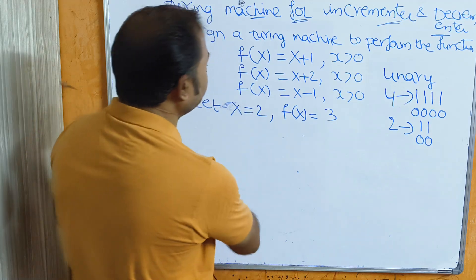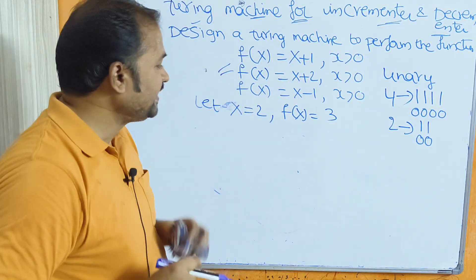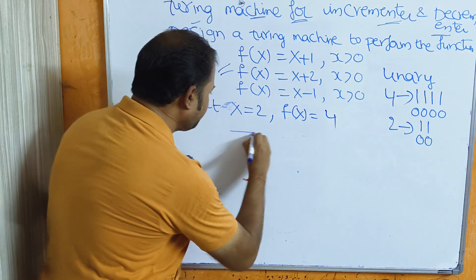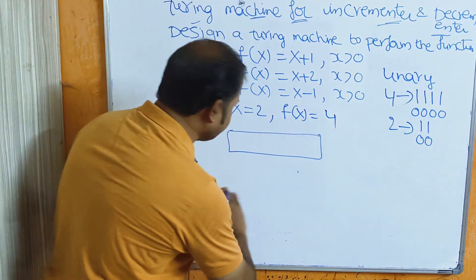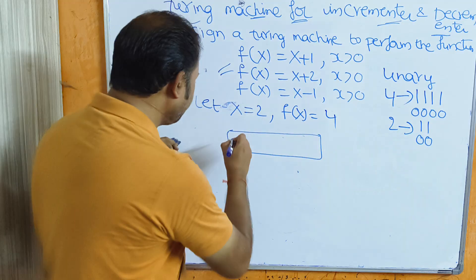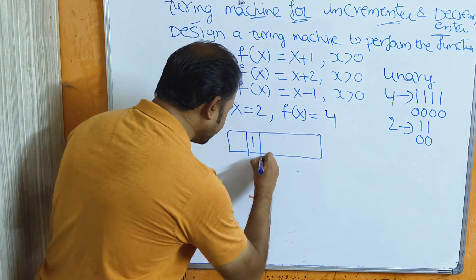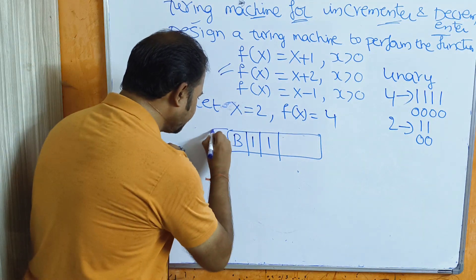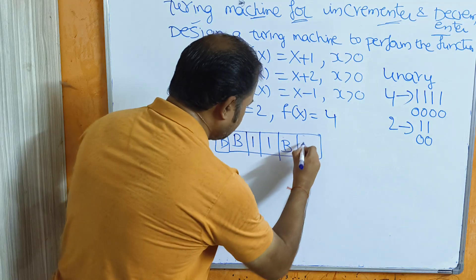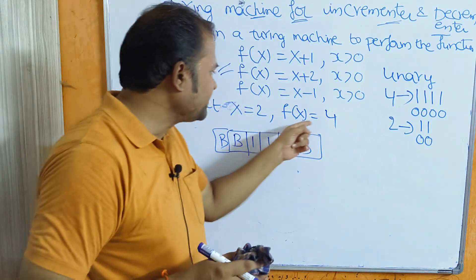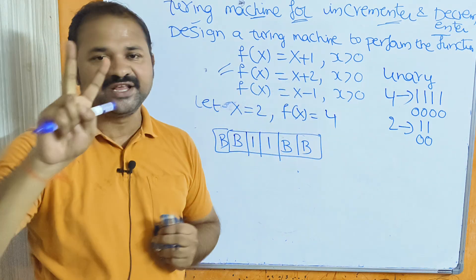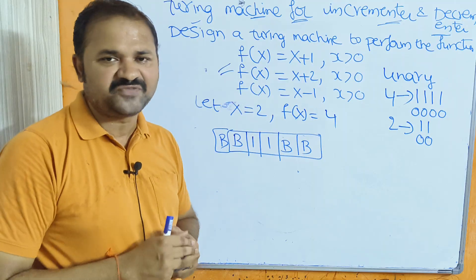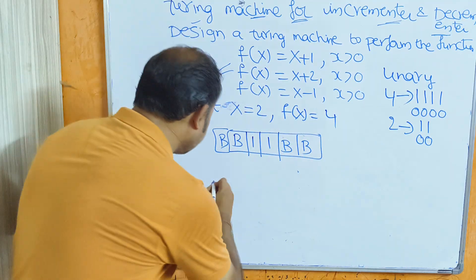The second operation is f(x) = x+2. Let x = 2; then f(x) = 2+2 = 4. We represent 2 in the input tape as two 1s. The logic is: in place of the two blank symbols after the string, if we place 1s, then we will get four 1s. So the result is 4.